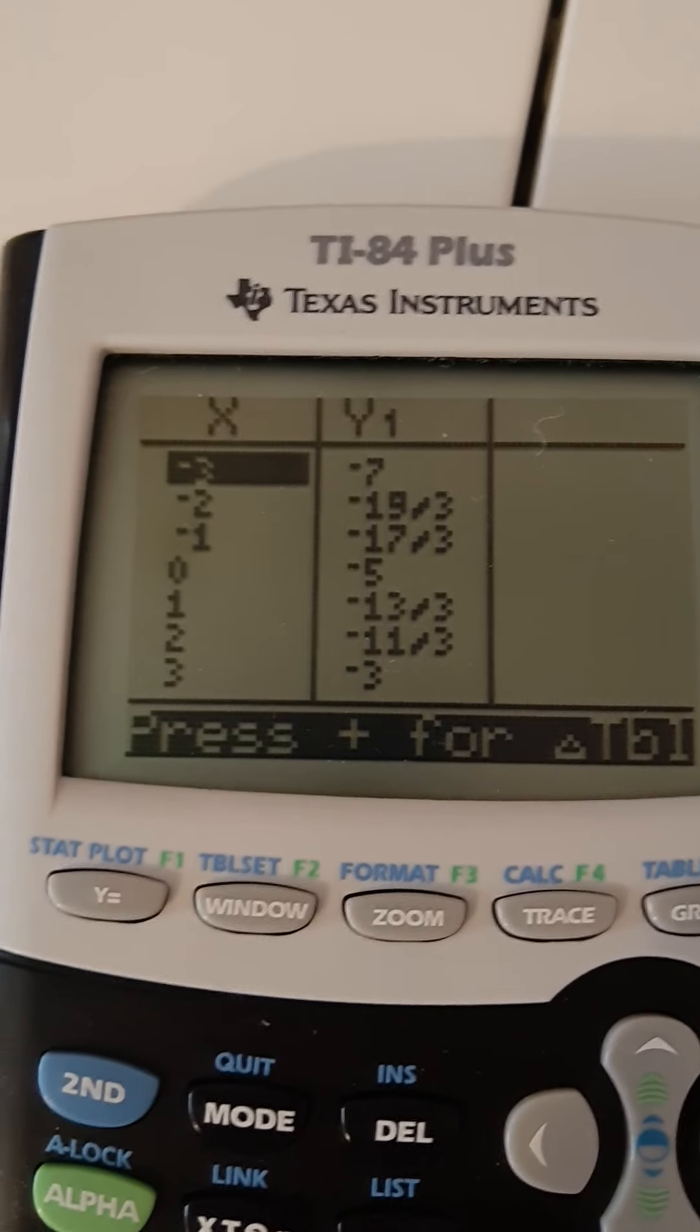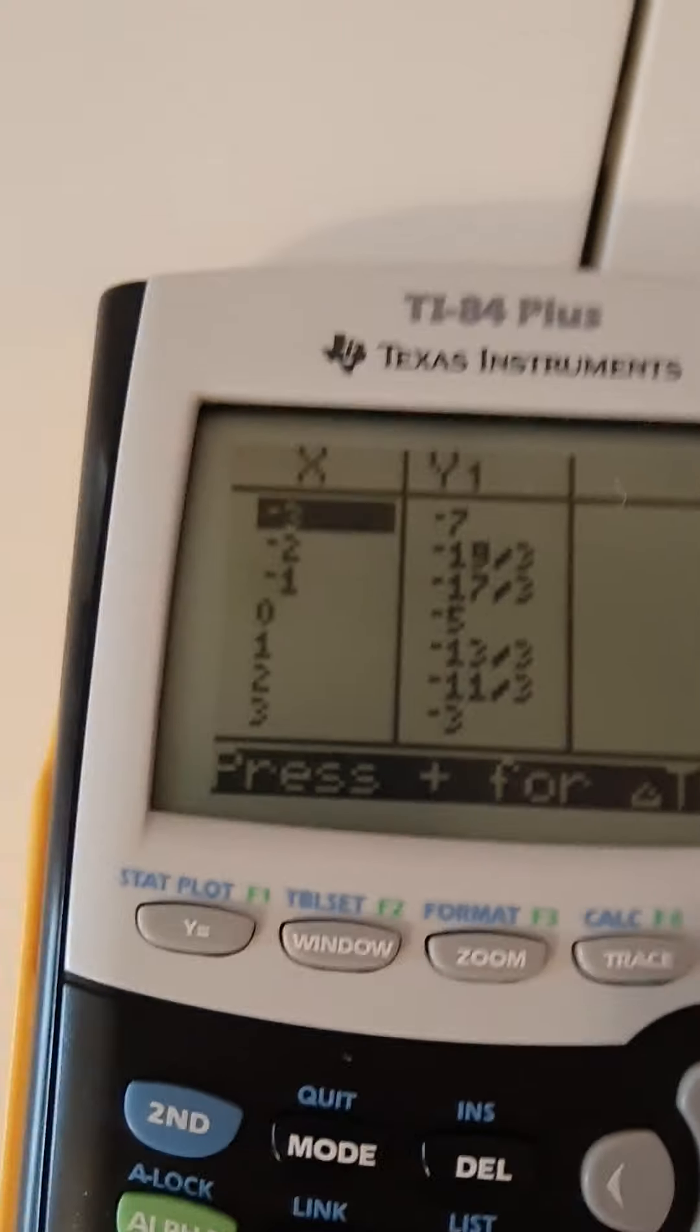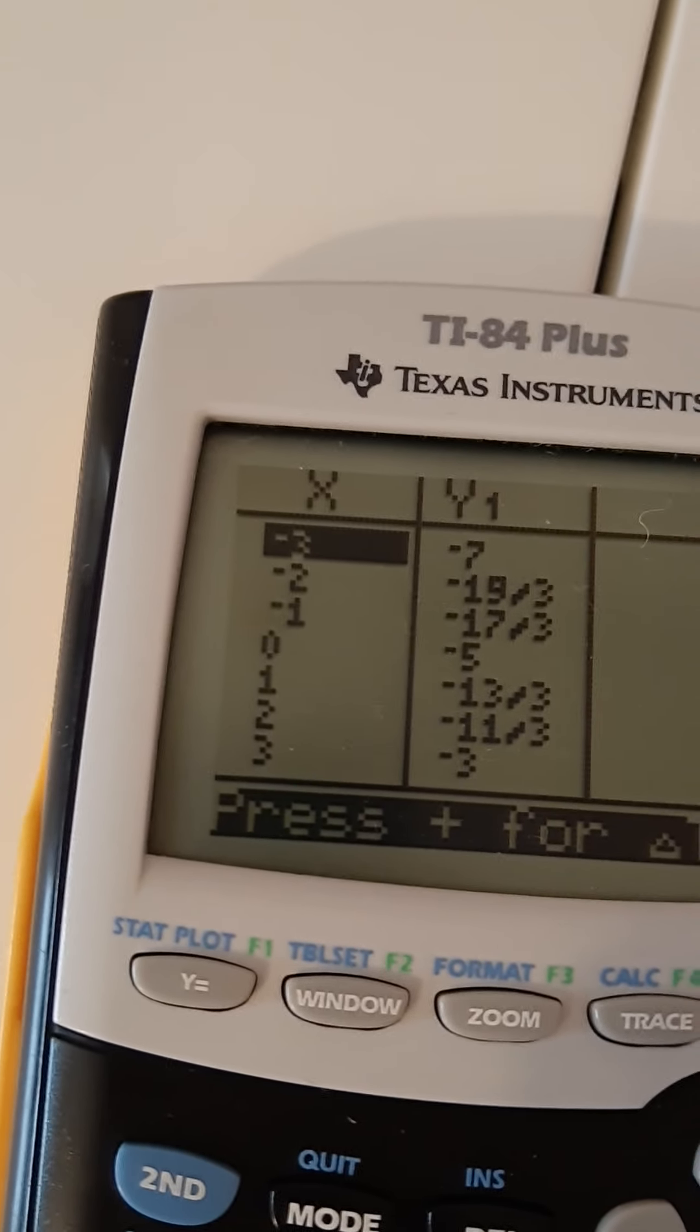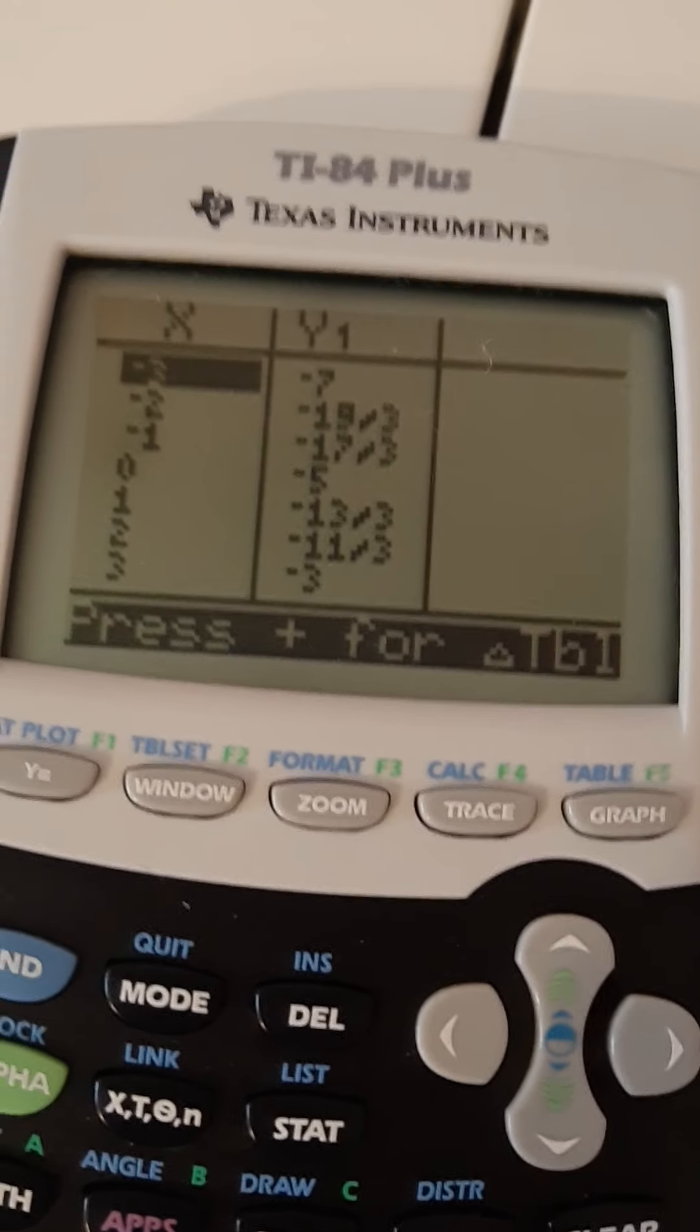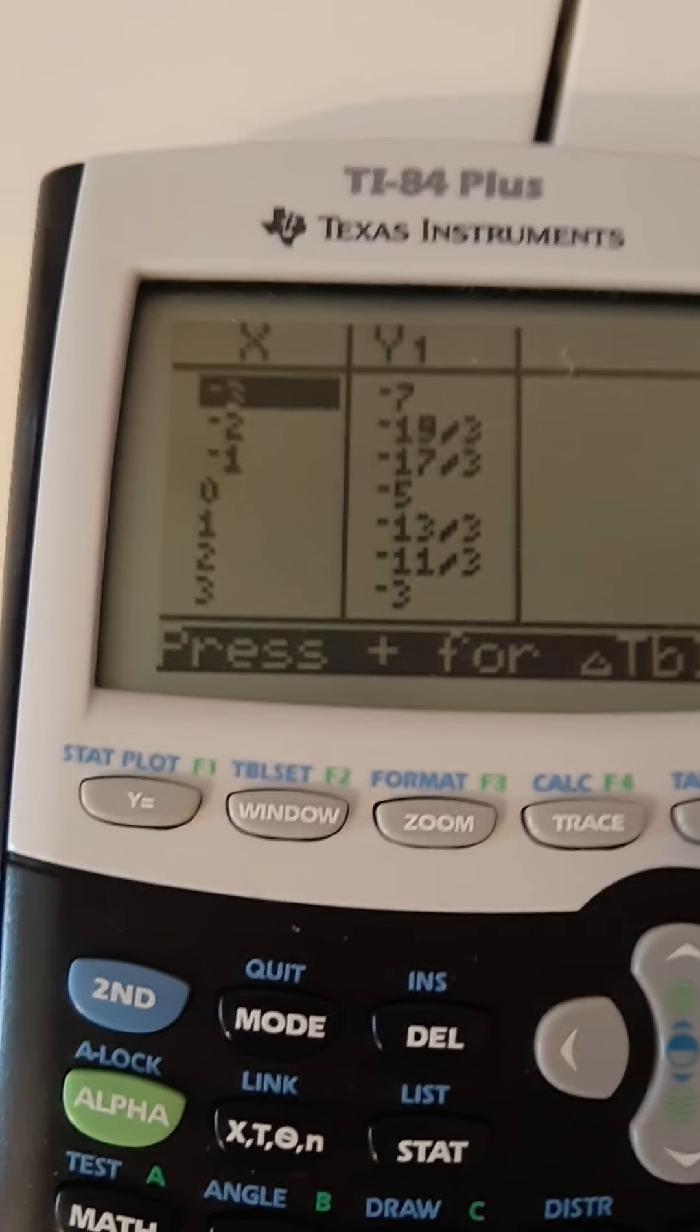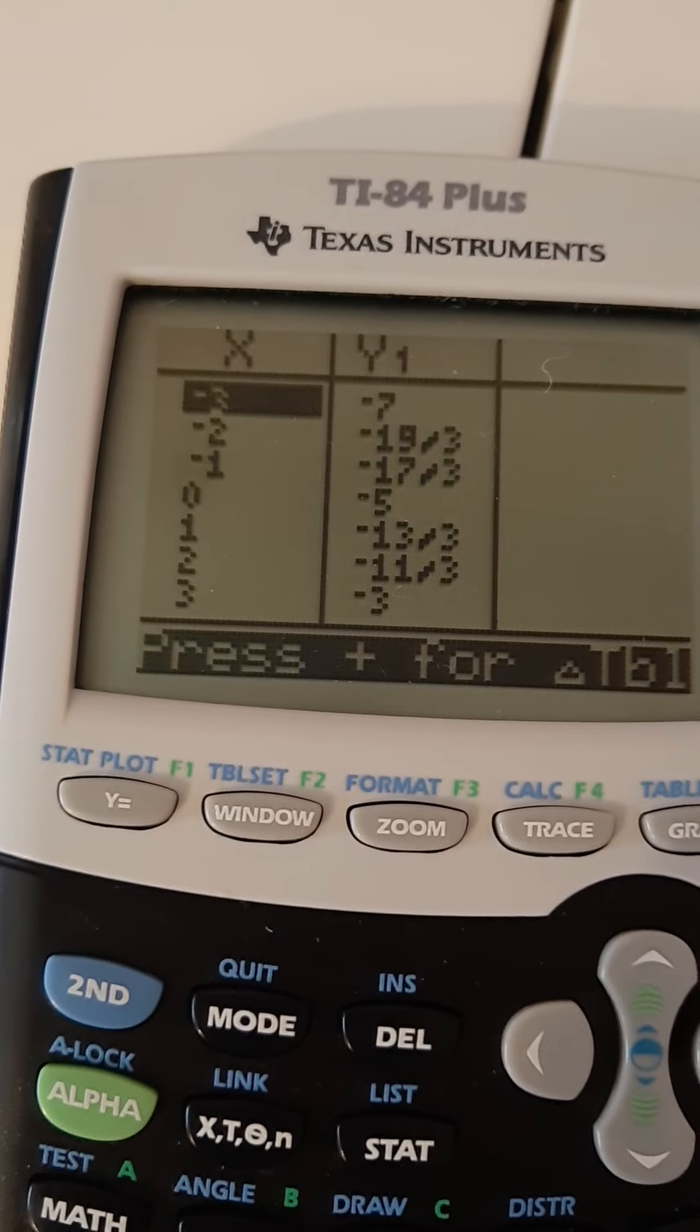So the fact that my slope was a fraction is why I have fractions in my calculator. You might have decimals in yours, ignore them. Pick the nice values, so I'm going to go with negative 3, negative 7, 0, negative 5, and 3, negative 3. So those are the three values that I'm going to use.